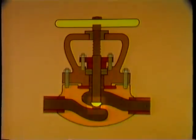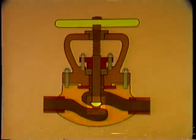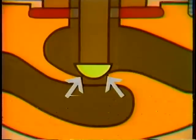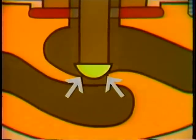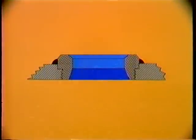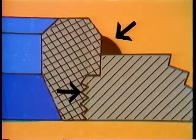Inside the valve body is the seating area. The seat is a stationary part of the valve — it is here that the disc closes on the valve body. The areas where the disc and seat come in contact must be smooth and fit perfectly to completely stop the flow of fluid or gas through the valve. The seat is often threaded or welded into the body of the valve. In high temperature, high pressure systems, a combination of threading and welding is used to prevent leakage between the valve body and seat.